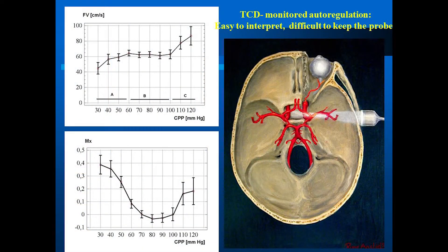Many of you may be aware of this data. This slide is one I borrowed from Merrick. They were measuring the pressure reactivity index by looking at the relationship between cerebral perfusion pressure and intracranial pressure. I'm showing another method here — using transcranial Doppler, insonating the middle cerebral artery. On the left there's a nice autoregulation curve: on the y-axis is flow velocity and on the x-axis is cerebral perfusion pressure. To do autoregulation monitoring, we simply look at the correlation coefficient between flow and cerebral perfusion pressure.